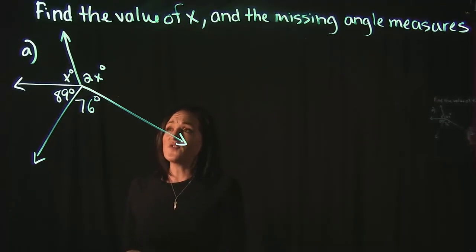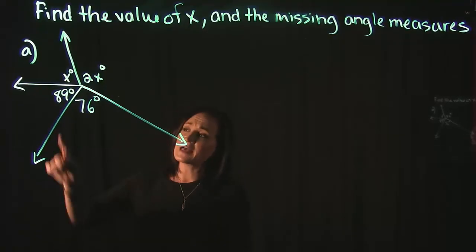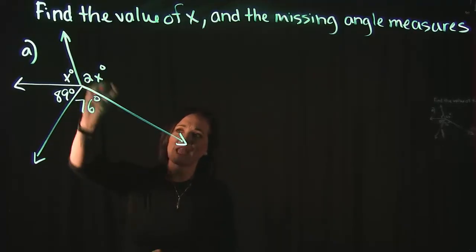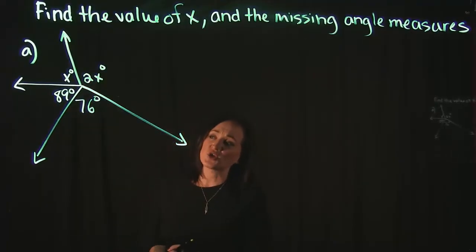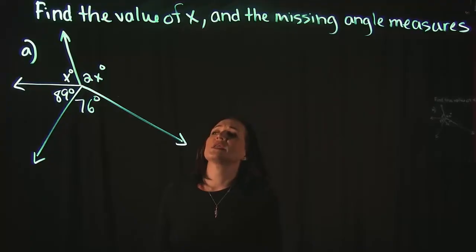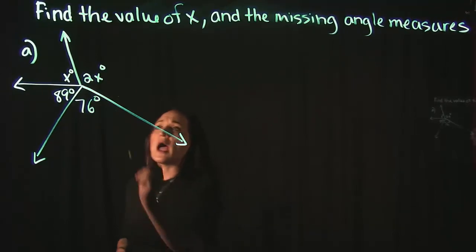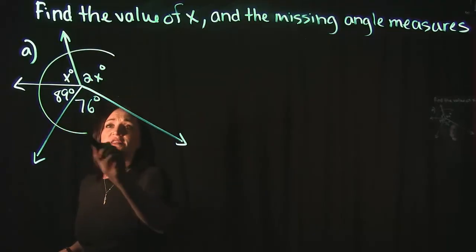But thankfully, when I do look at this problem here, everything either already has a value for it or has an x attached to it. So the only way to really figure this kind of problem out is using the definition of a circle and what angle measures a circle has. So I'm going to draw a circle around this entire thing.